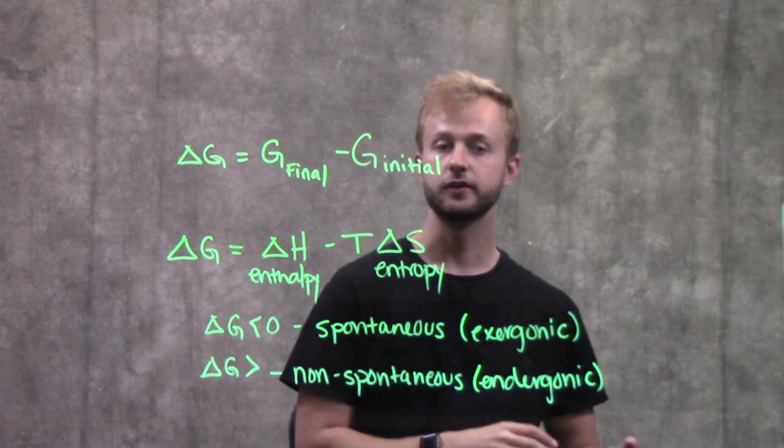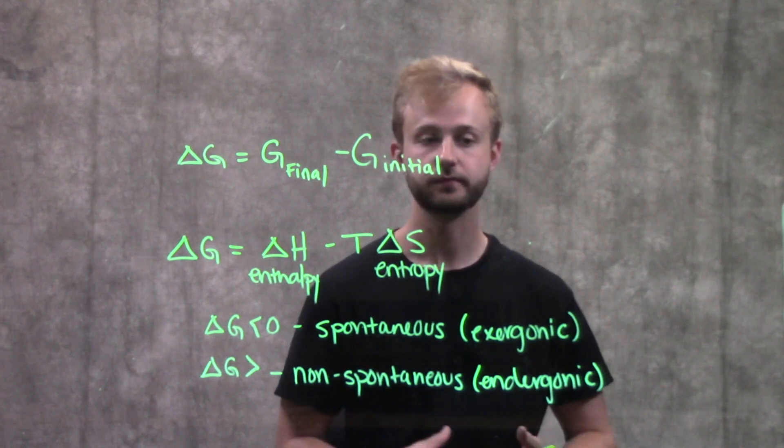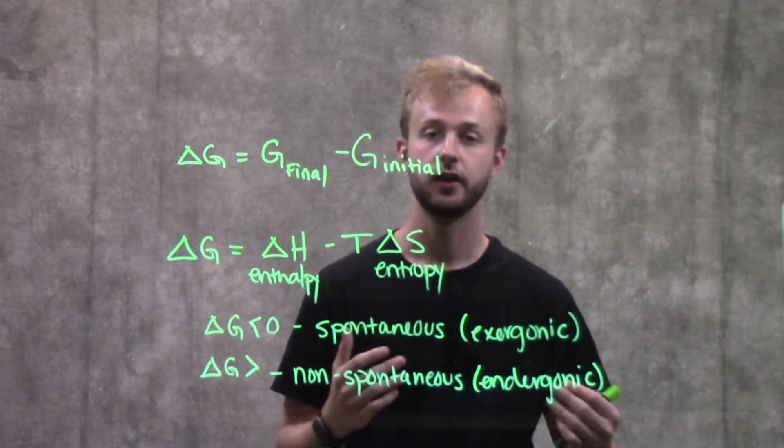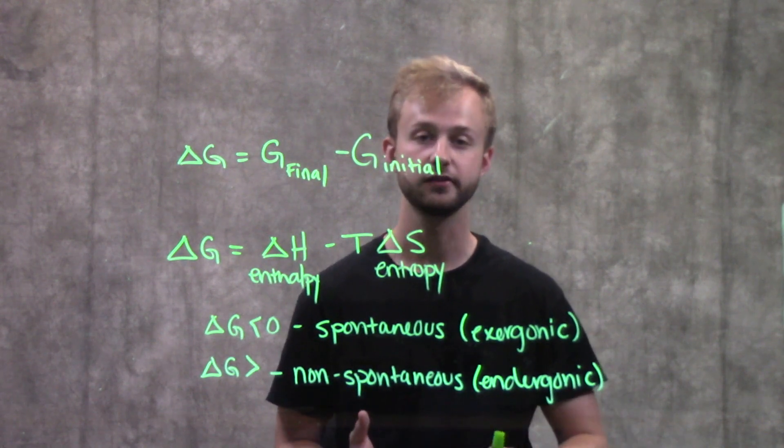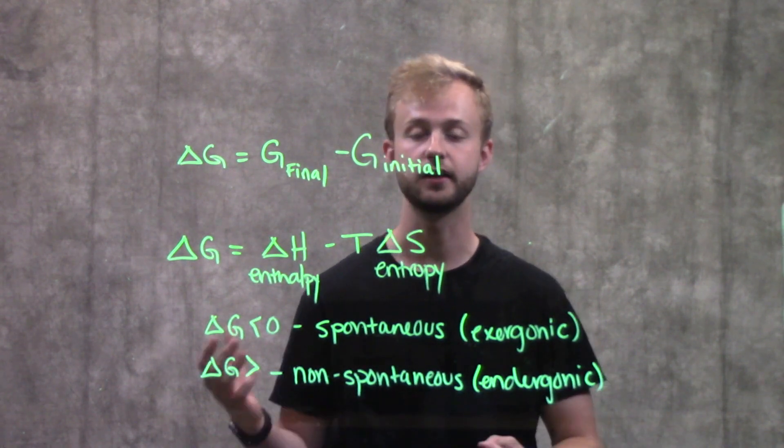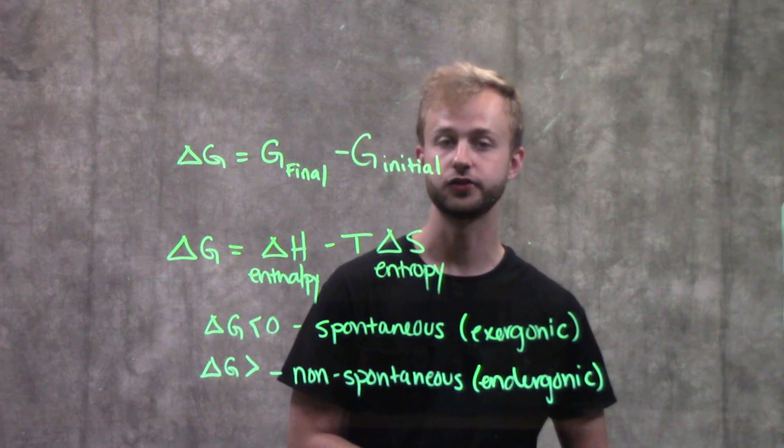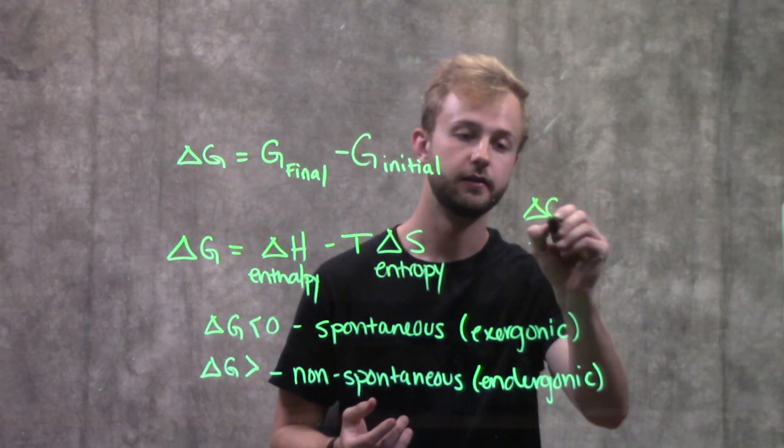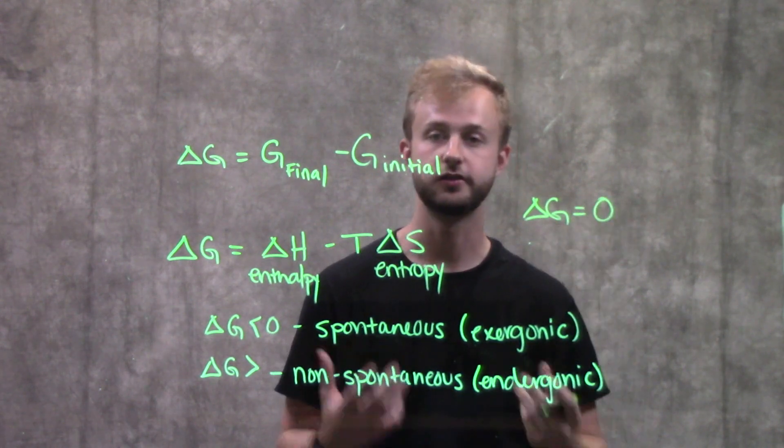So kind of going along that same process, we're going to look at equilibrium. So at equilibrium, we have the forward and reverse reactions going at the same rate, so we have no net change in the concentration of products and the concentration of reactants. So when this happens, delta G is actually equal to zero.